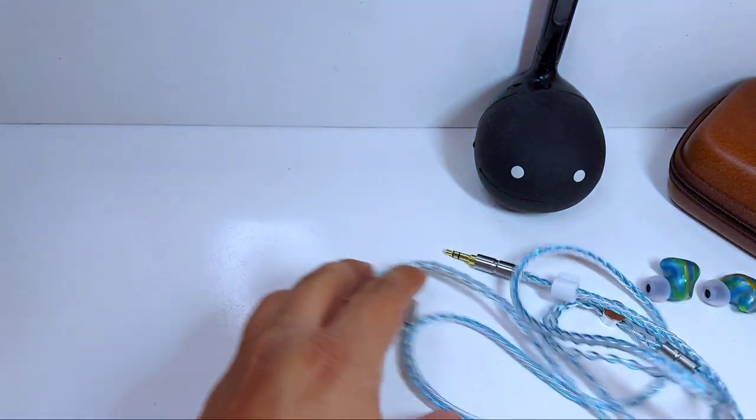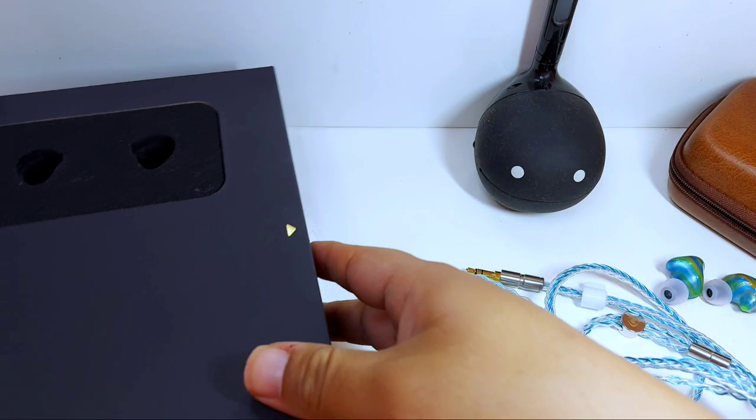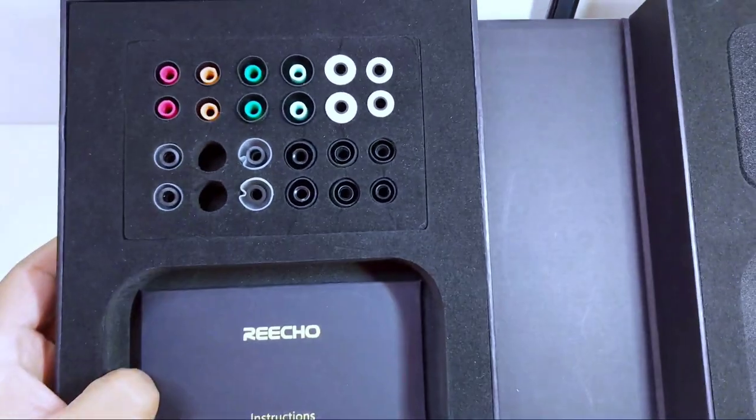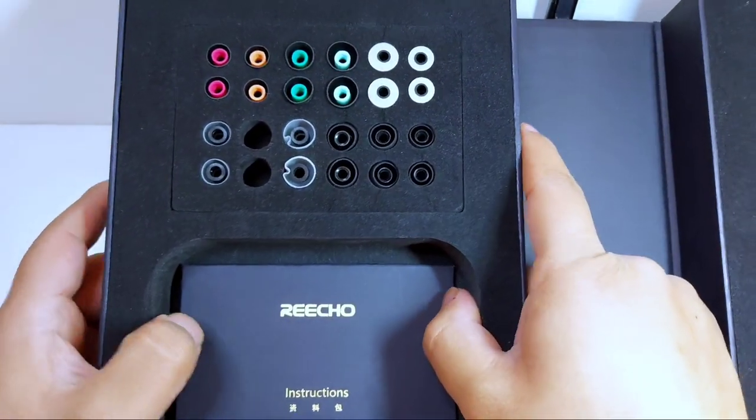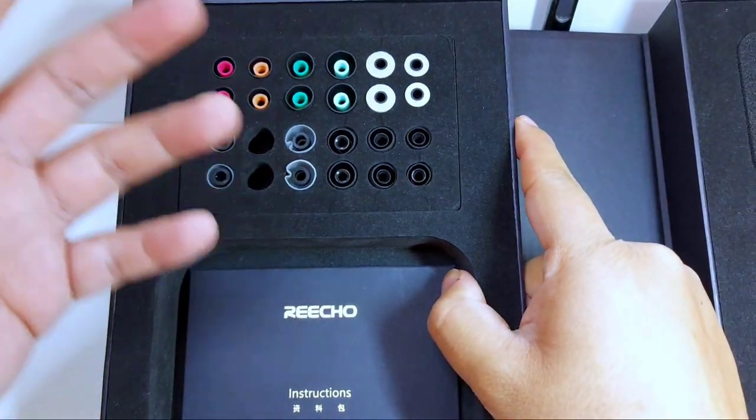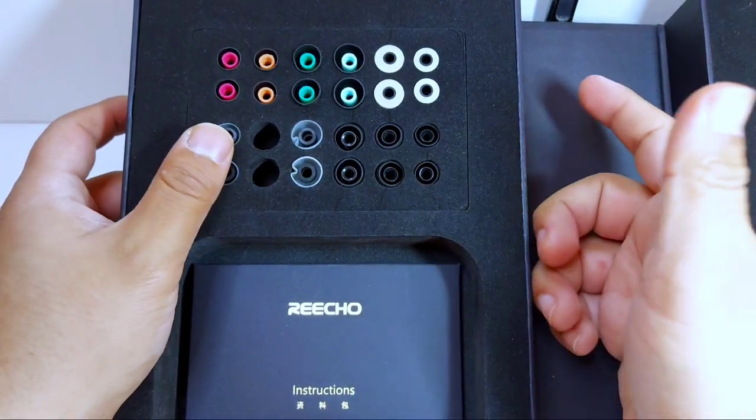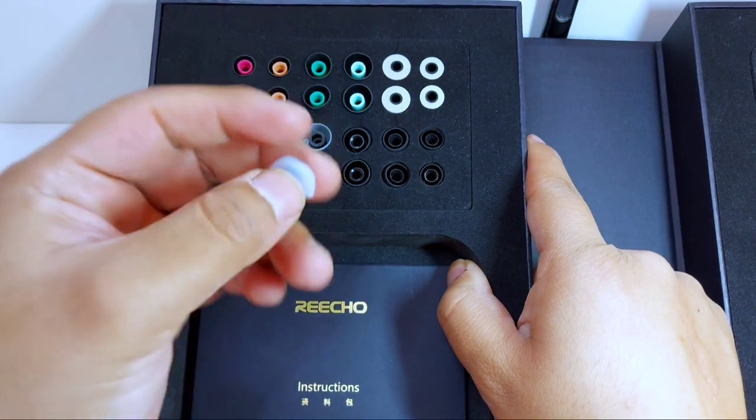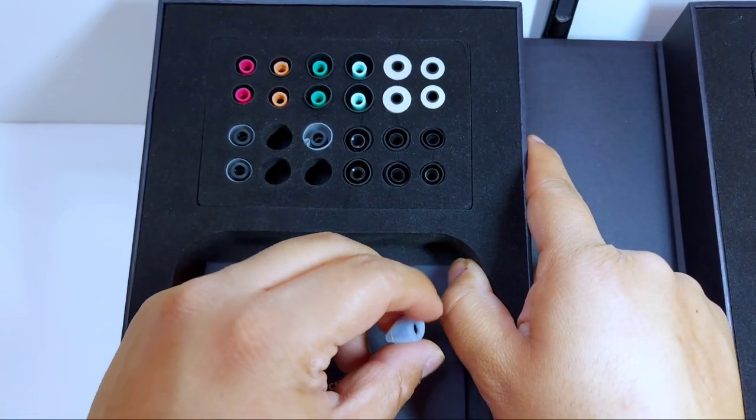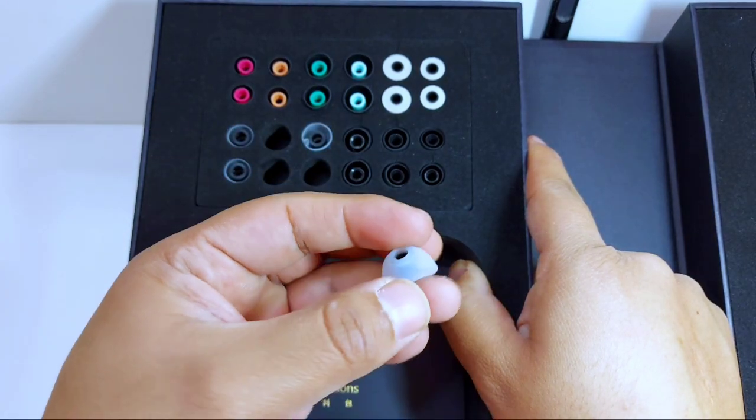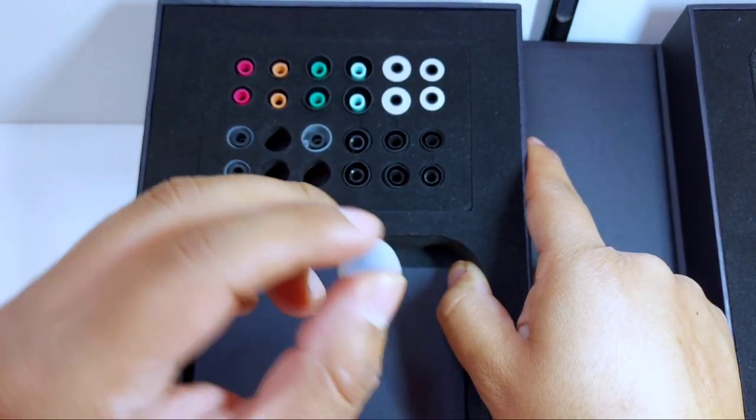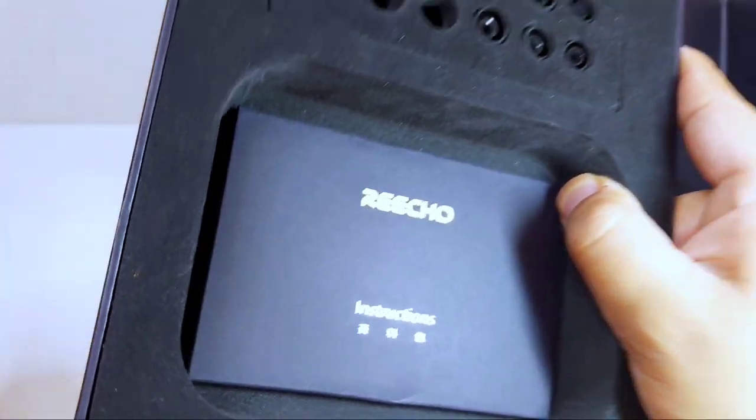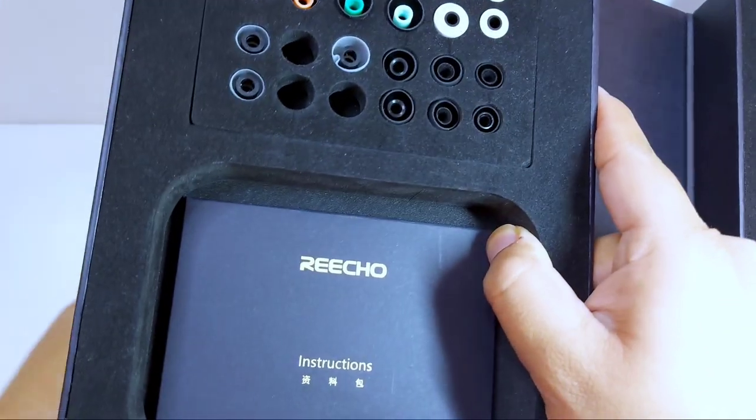Vamos a regresar nuevamente a la caja. Sobre los demás accesorios, pudimos observar, obviamente, un set muy completo de puntas que, a mi consideración, es bastante bueno el hecho de tenerlo, ya que estos in-ears muestran alguna particularidad de acuerdo al tipo de puntas que uno llegará a tener. A mi consideración, estas blancas, que incluso son las que contiene el auricular en este momento, son las que son un poco más cómodas a diferencia de las demás y, sobre todo, equilibradas.